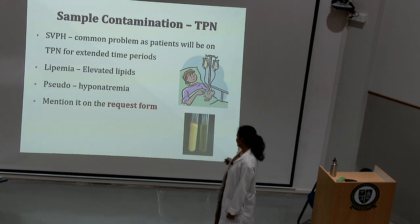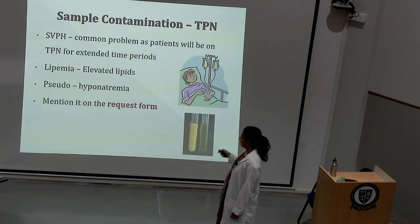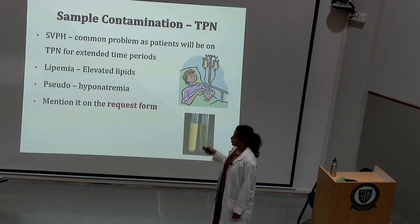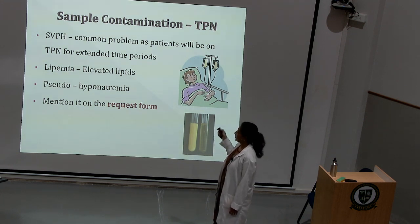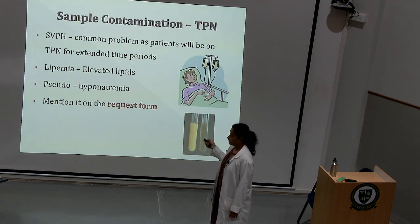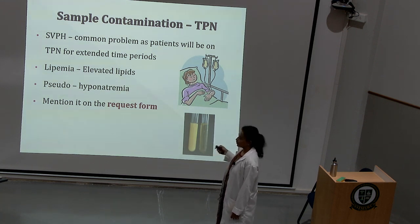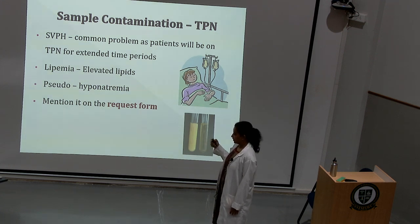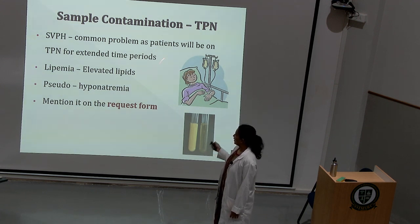Contamination from total parenteral nutrition can cause lipemia, which interferes with the analysis of most chemistry analytes and can also lead to pseudo-hyponatremia. Total parenteral nutrition means nutrition is provided through a parenteral — intravenous — route for patients unable to take oral feeds, such as comatose patients. If you are collecting samples from such patients, you need to mention it on the request form. There can also be possible contamination of the sample with bacteria, which is relatively uncommon.